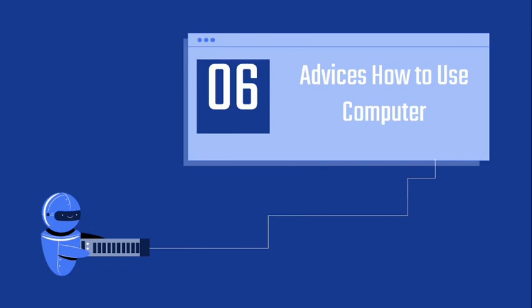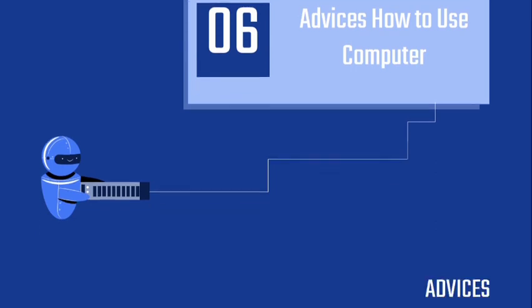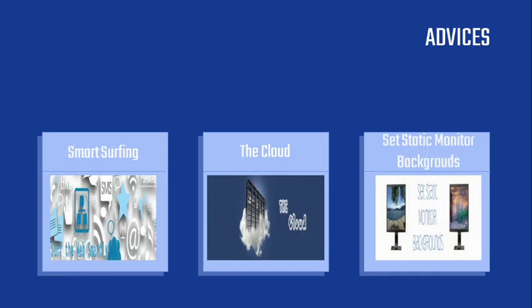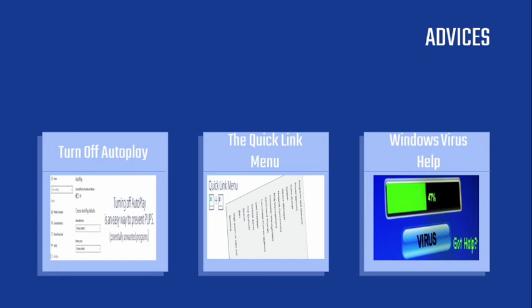The sixth is advice on how to use a computer. The advice is: one, wireless basics. Two, computer security. Three, data backup. Four, smart surfing. Five, the cloud. Six, set a static monitor background. Seven, turn off autoplay. Eight, the quick link menu. Nine, Windows Viewer's Help.